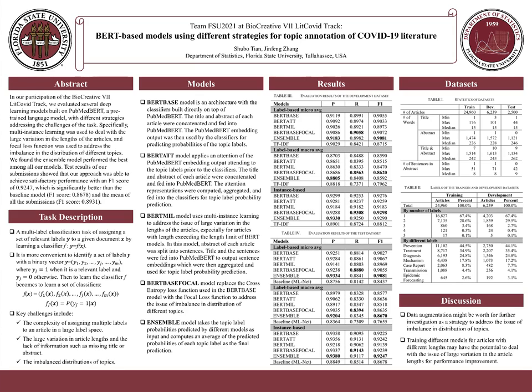There are three datasets for this task: a training set and a development set for model development, and a test set for evaluation. The key challenges of this task include the complexity of assigning multiple labels to an article, the large variation in article lengths, missing titles or abstracts, and imbalance in topic distributions.